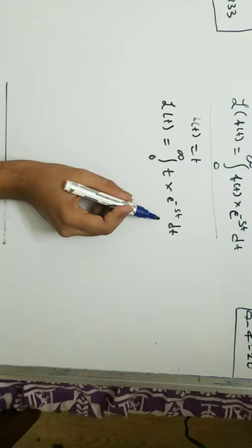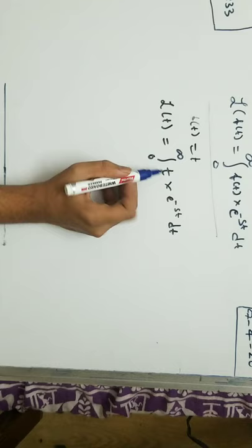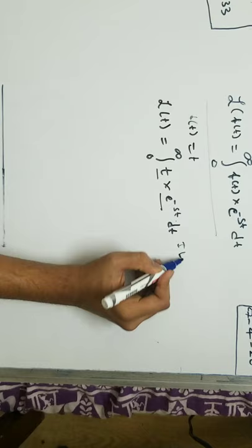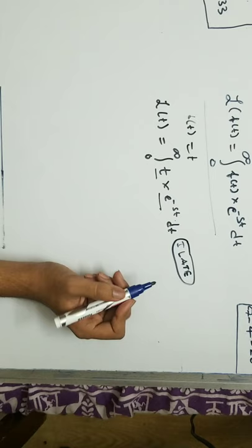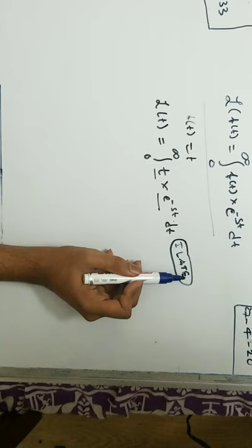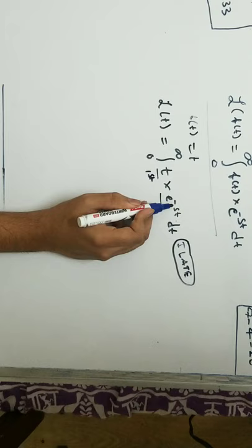In this integral we have two functions: t and e to the power minus st. Using the form of ILATE - this is a mnemonic used for determining which is the primary function and secondary function: Inverse, Logarithmic, Algebraic, Trigonometric, Exponential. So t is going to be the primary function and e to the minus st is going to be the secondary function.